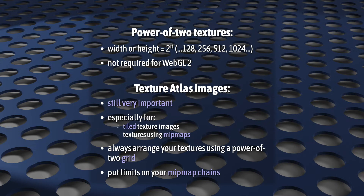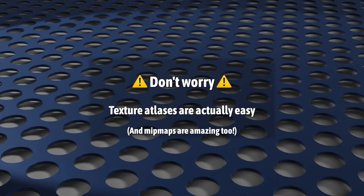What is this detail? With version 2, WebGL doesn't care about power-of-two texture images anymore — images with a pixel height or width of 128, 256, 1024, or whatever. But texture atlases still do, especially if you're working with tiled images. If you're using mipmaps, you have to keep mipmap levels in mind because of texture pollution. You should make sure that each texture in your atlas fits cleanly into a grid spaced using power of two, and you must put hard limits on your mipmap chain so that minification doesn't cause pollution. It's just like making sure your shoes are tied before you go for a walk.